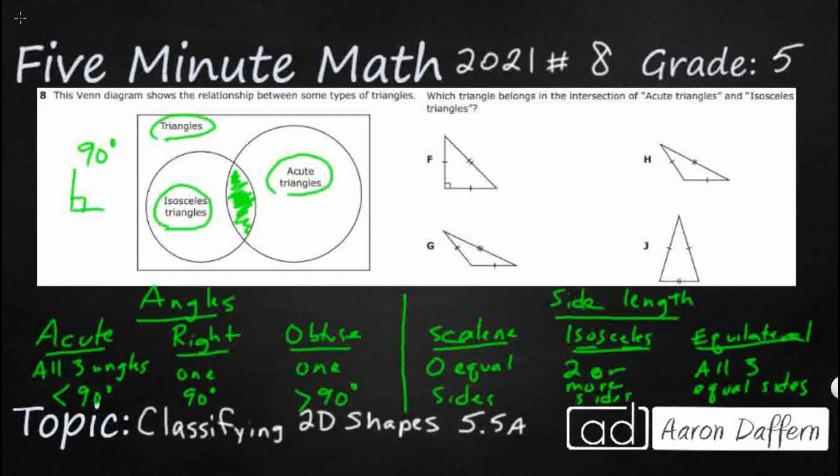So that's the strange thing about isosceles. So isosceles is two or more equal sides, but all equilateral triangles can also be described as isosceles because when you have three equal sides, you also have at least two equal sides.